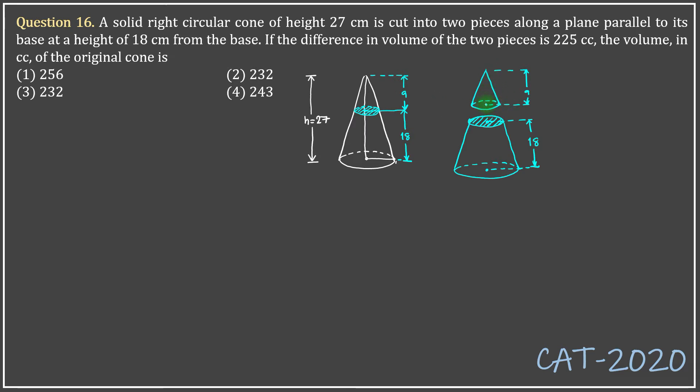And an 18 centimeter long frustum of a cone. If the difference between the volume of the two pieces is 225 cc, so now I know that the volume of this piece will obviously be less than the volume of the frustum, so the difference v2 minus v1 is given. V2 minus v1 is 225. What we need to find is the volume in cc of the original cone, that means v1 plus v2 is what I am set out to find.